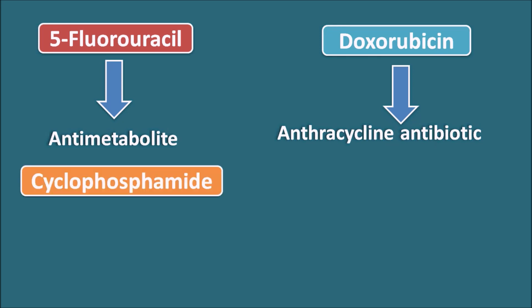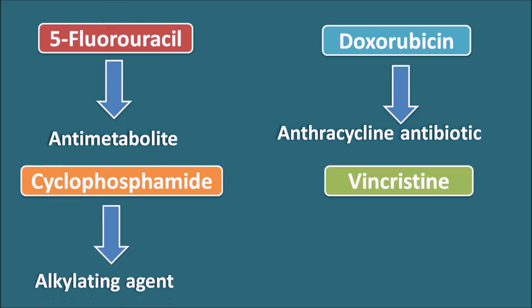Cyclophosphamide is an alkylating agent. Vincristine is a natural alkaloid acting as a spindle poison. It is an anti-mitotic drug that inhibits mitosis by inhibiting the conversion of beta-tubulin into microtubules.